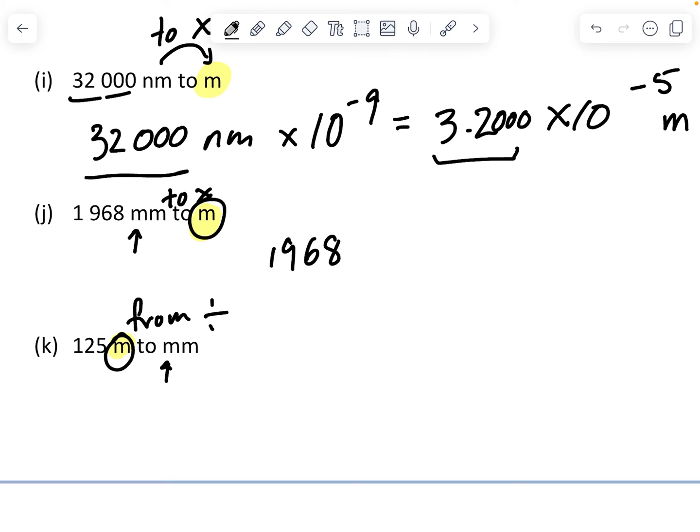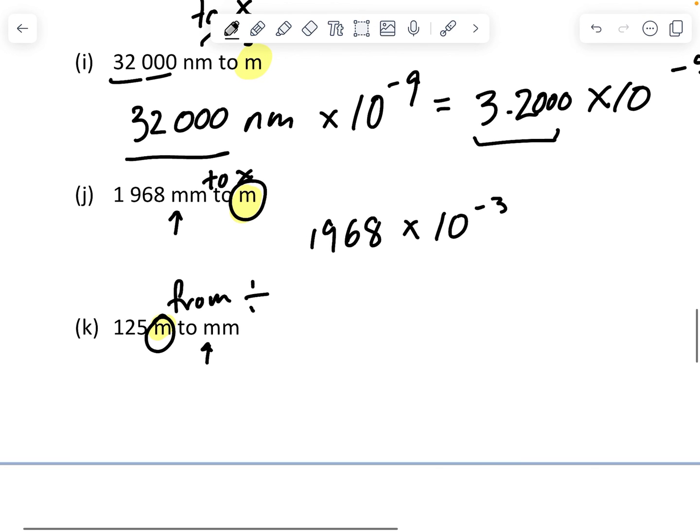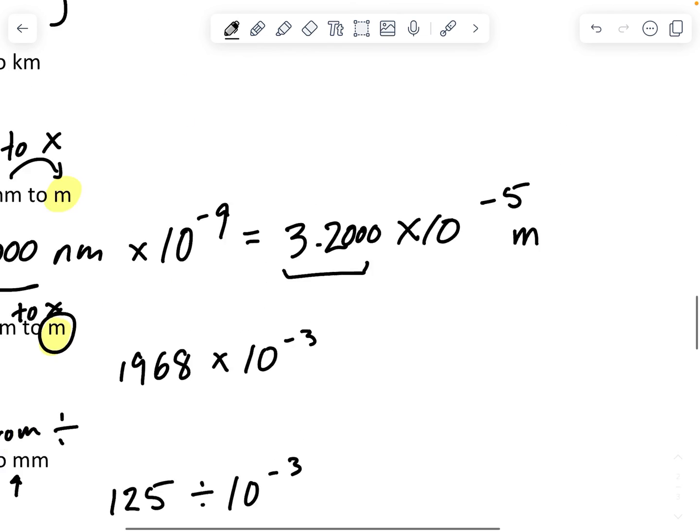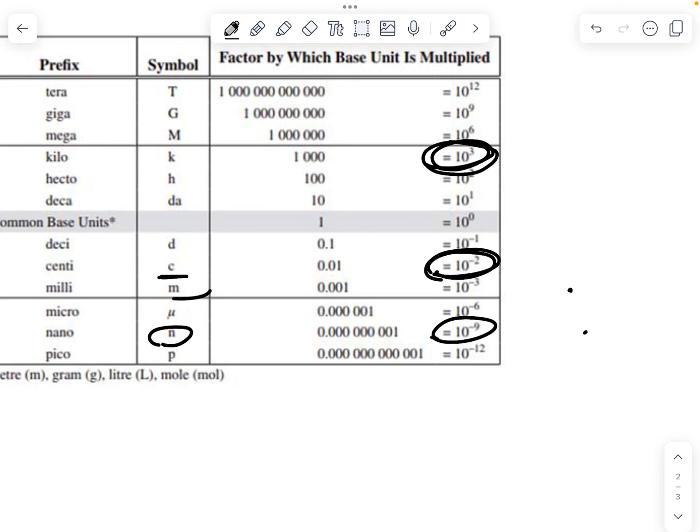The next one has 125. And this is going from. So I'm going to divide by 10 to the minus 3. And that 10 to the minus 3, again, was just in here. Millis are here. And they're 10 to the minus 3. Hopefully, that helps you be able to convert between SI prefixes using this kind of a table. There are similar tables in the Science 30 data booklet and in the Chemistry 30 data booklet.